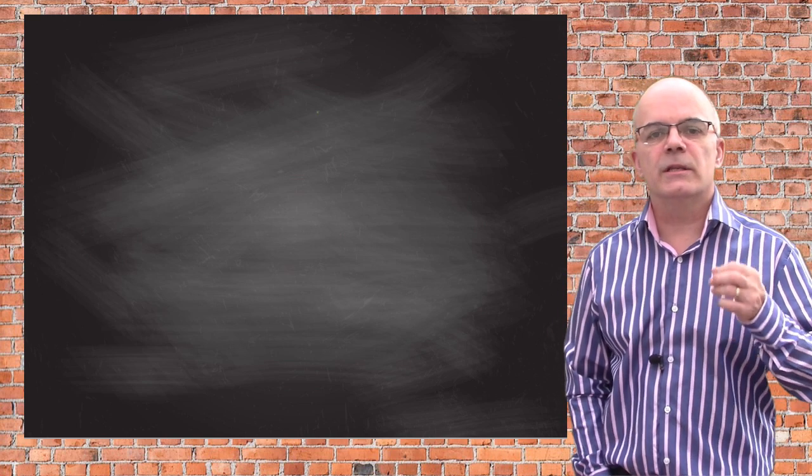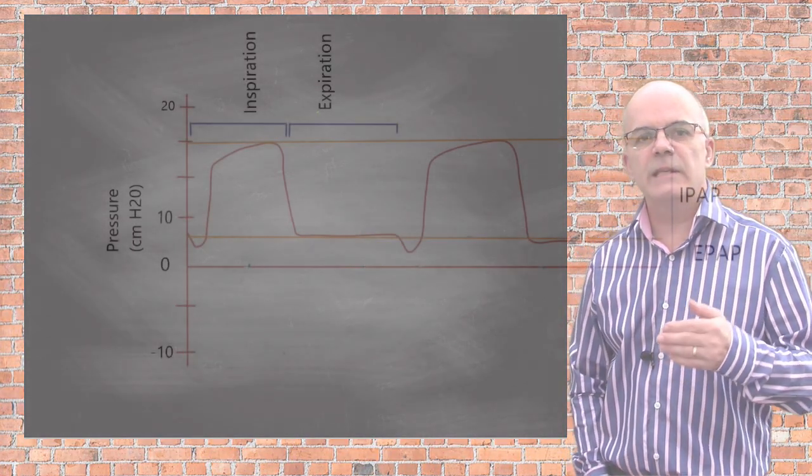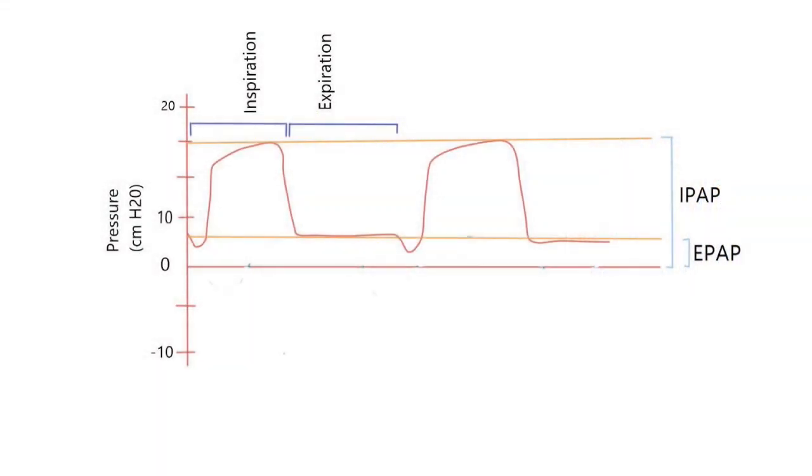In BiPAP, the patient triggers an inspiration by a sudden downward deflection in the airway pressure. When the machine senses this, it delivers positive pressure equal to the IPAP. Airflow increases into the alveoli, and as it reaches the IPAP set, then flow will drop.